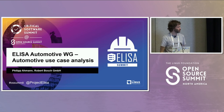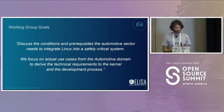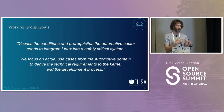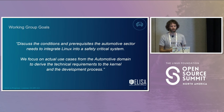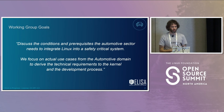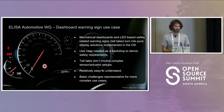I'll kick it off with the automotive work group. First of all, let's take a short look at what we are aiming for. We want to see and discuss the conditions, prerequisites, whatever is needed in the automotive sector to target use cases there. We want to derive requirements from the use case and what it means to the kernel and the development process. We know there is the ISO 26262, which puts high demands on safety in the car. We are very open for any use case which could come up, and the first use case we took was the dashboard.